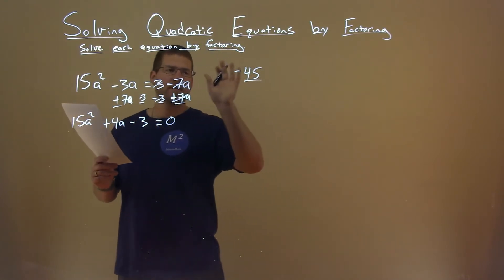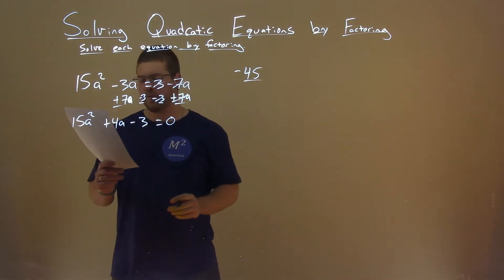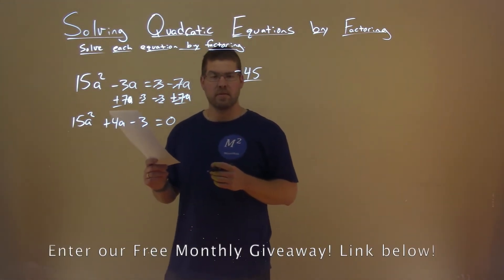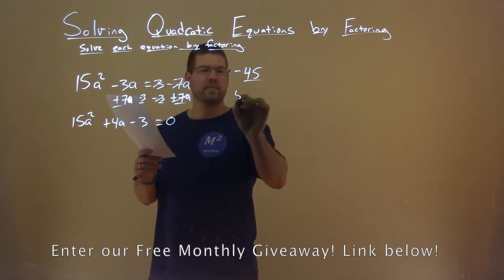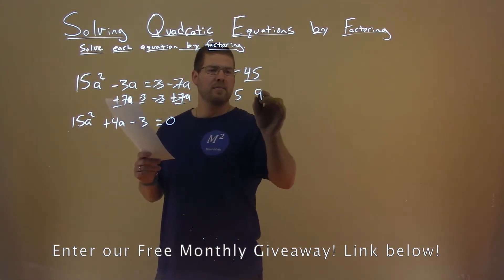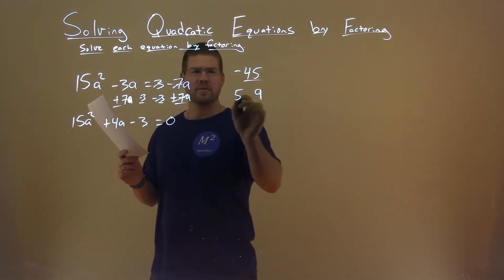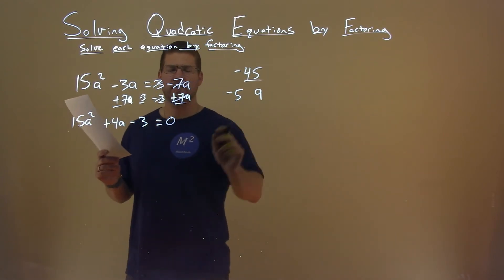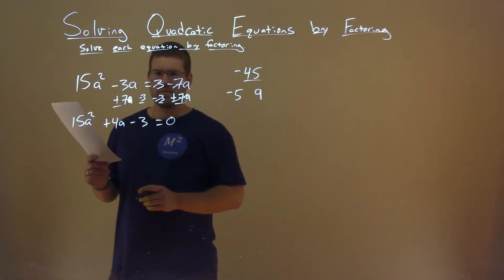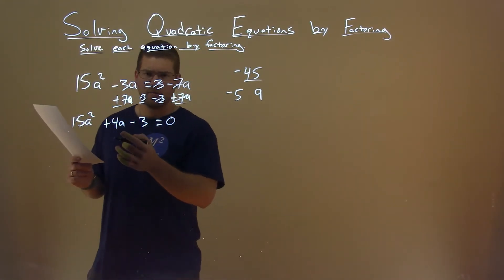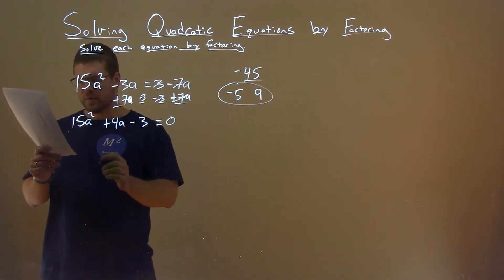So we're going to find two numbers that multiply by -45, but as we're going through, if they add to be positive 4, we're done. When I think of 45, I always start with 5 times 9, and my first guess here, -5 times 9 is -45. Add them together, and I get positive 4. So we're actually done. These are the numbers we're going to use. I don't have to go through the rest of the factors or multiples of 45.